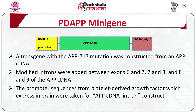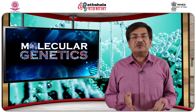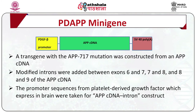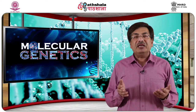Mouse models for Alzheimer's disease were created by transgenesis with transgenes containing mutations in the APP gene. Two mutant forms of APP — APP 717 and APP 670/671 — were used for creation of transgenic mouse models. The transgene with the APP 717 mutation was constructed from an APP cDNA; modified introns were added between exons 6 and 7, 7 and 8, and 8 and 9 of the APP cDNA. Presence of introns in the transgene increases the rate of transcription.